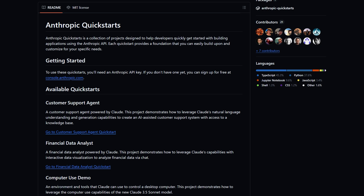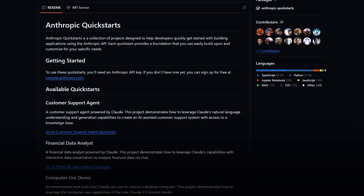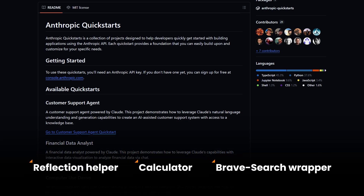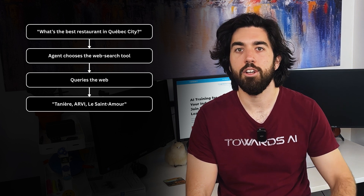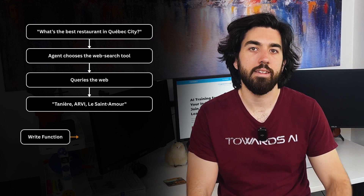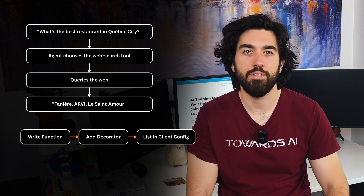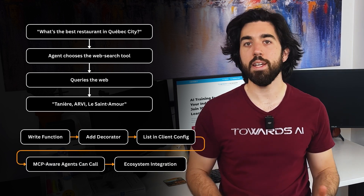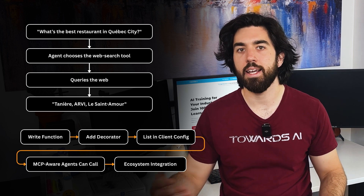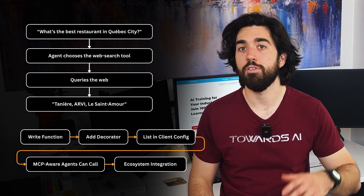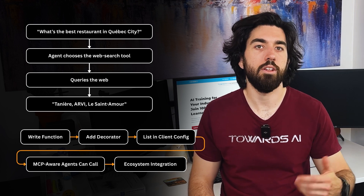If you'd rather see raw code, Anthropic's quickstart agent repo is a good place to start. One notebook defines three tools: a reflection helper, a calculator, and a Brave Search wrapper. Plug them into an agent and you can ask any question, like 'what's the best restaurant in Quebec City?' The agent decides on its own to hit the web search tool and answers with a short list. In short: write a function, decorate it, list it in your client config, and every MCP-aware agent can call it. The rest of the ecosystem — Agent SDK, LangChain, LlamaIndex, CrewAI, LangGraph — takes care of the plumbing so you can stay focused on what the tool actually does.